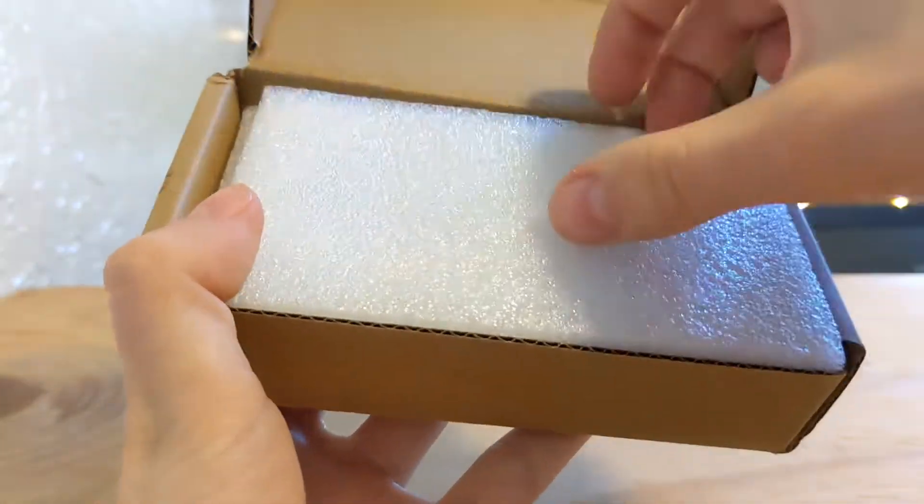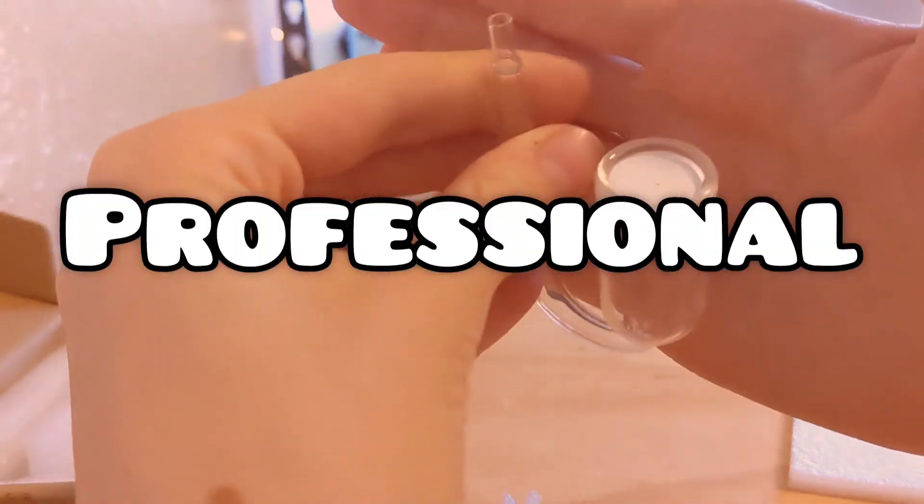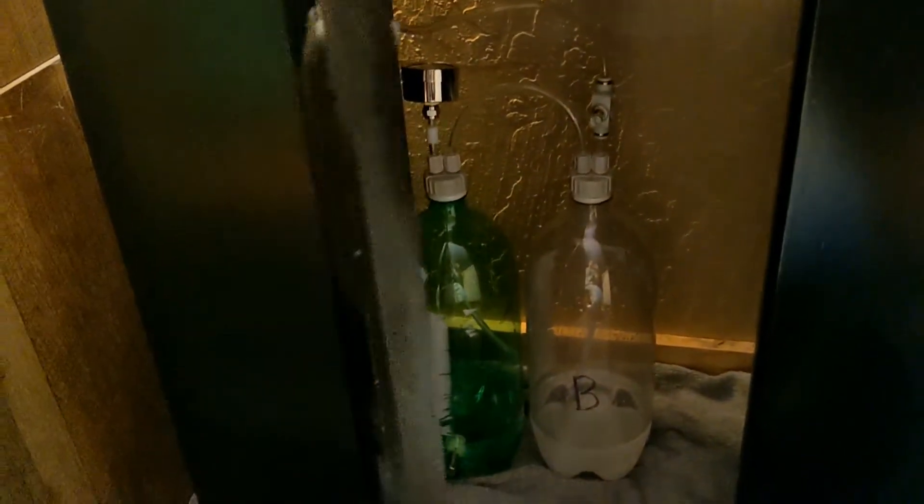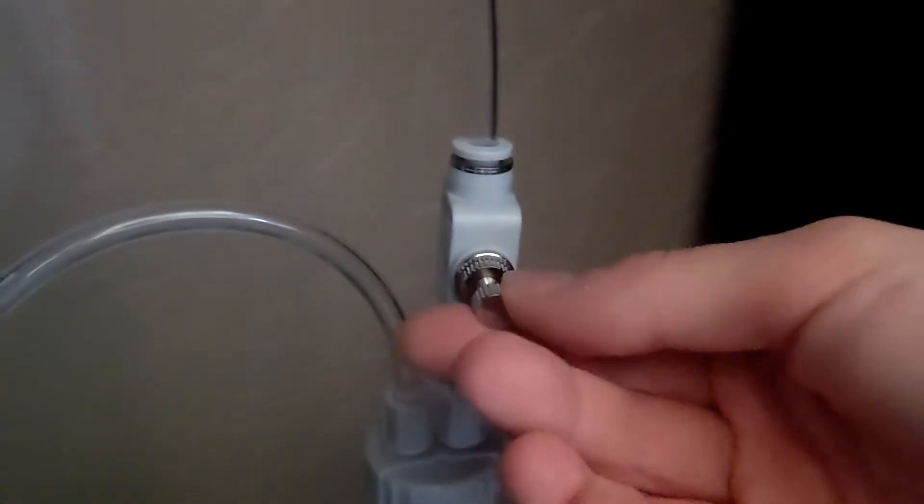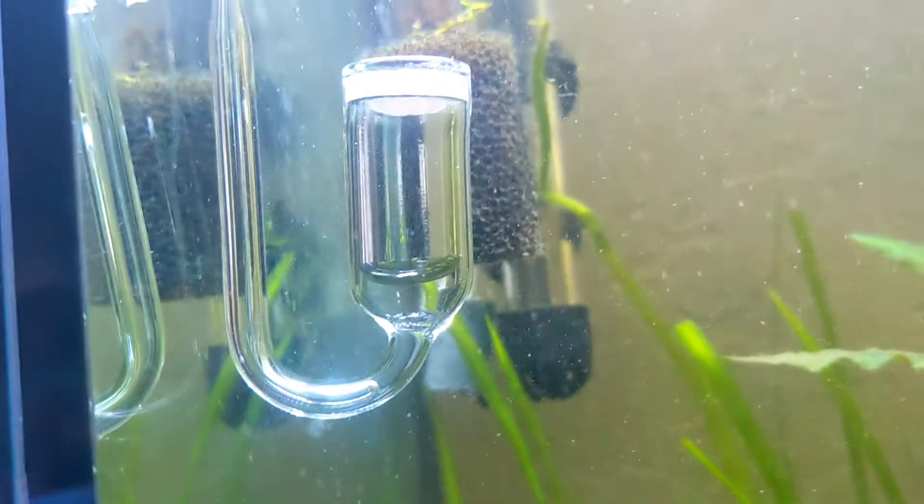And finally you can get out that awesome looking CO2 diffuser. I don't know why, but they just look so professional. You can attach that to the other end of the airline tubing and put both the bottles underneath your fish tank. Now is when you can slowly start turning that trimmer valve to let CO2 in. You can adjust it to however you want, but just make sure that you're not overdosing.